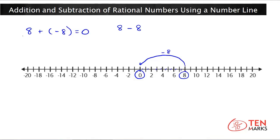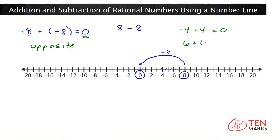What you learn from this is that 8 and negative 8 are opposite numbers. Opposite numbers have the same value but opposite signs — one is positive, one is negative. When you find the sum of opposite numbers, you always get 0. You can do this with any number: negative 4 plus 4 gives 0; 6 plus negative 6 also gives 0. Same value, opposite sign — the sum is always 0.